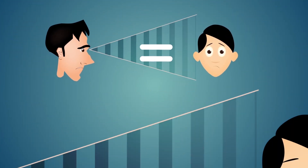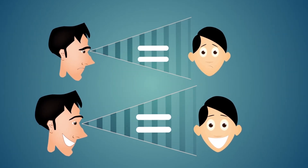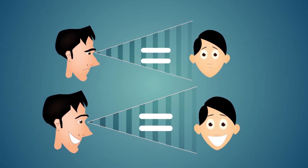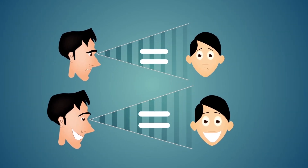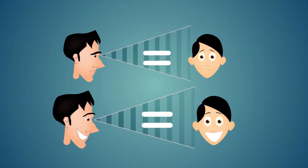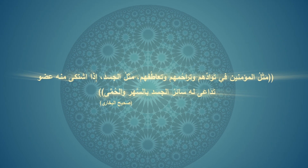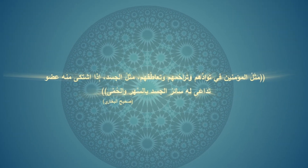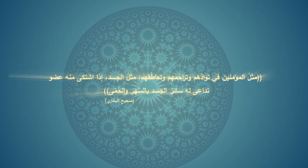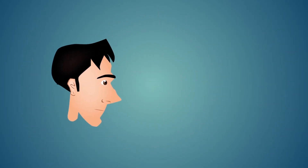عصبونات المحاكاة من أهم الاكتشافات الحديثة في علوم المخ والأعصاب، وهي تفسر إحساسنا بمعاناة الآخرين وآلامهم كأننا نشعر بها حقيقةً ونتعاطف معهم. وهذا تحقيق لقوله صلى الله عليه وسلم: 'مثل المؤمنين في توادهم وتراحمهم وتعاطفهم كمثل الجسد الواحد إذا اشتكى منه عضو تداعى له سائر الجسد بالسهر والحمى'.